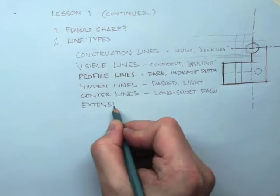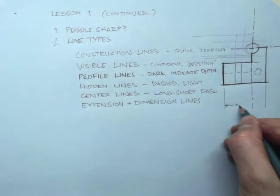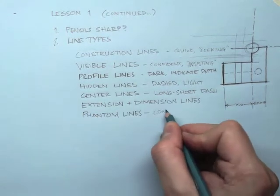We show dimensions with two leaders and a number between them as well as lines showing the offset from the part. Those are called extension lines.